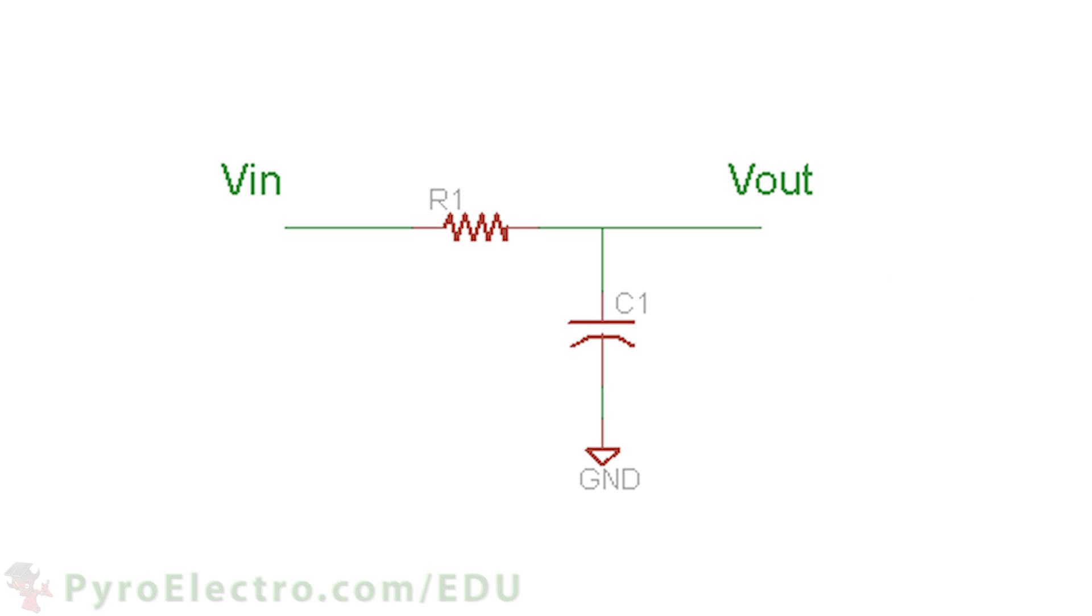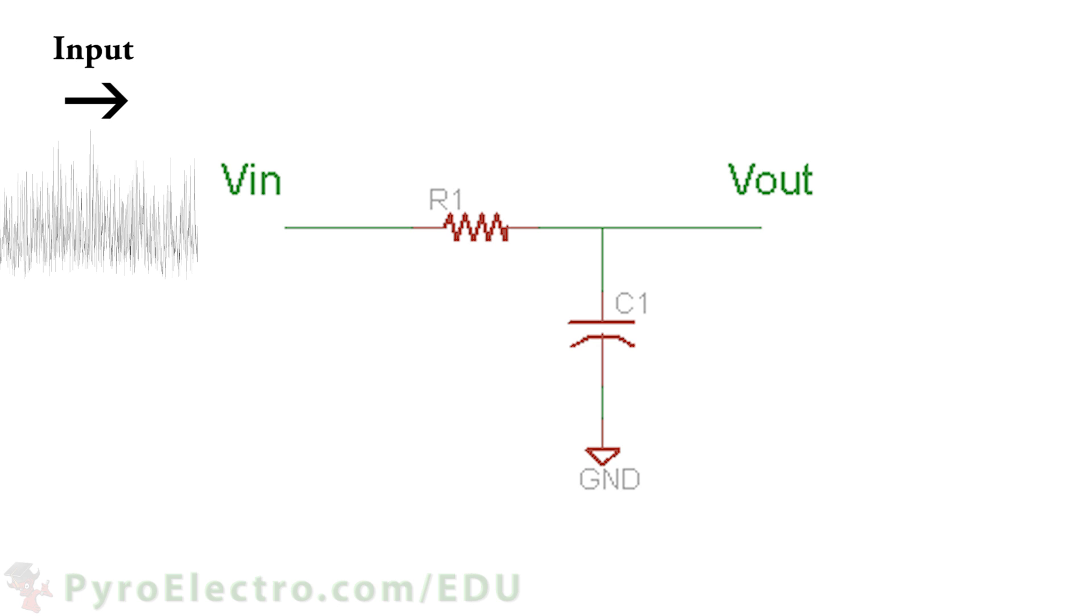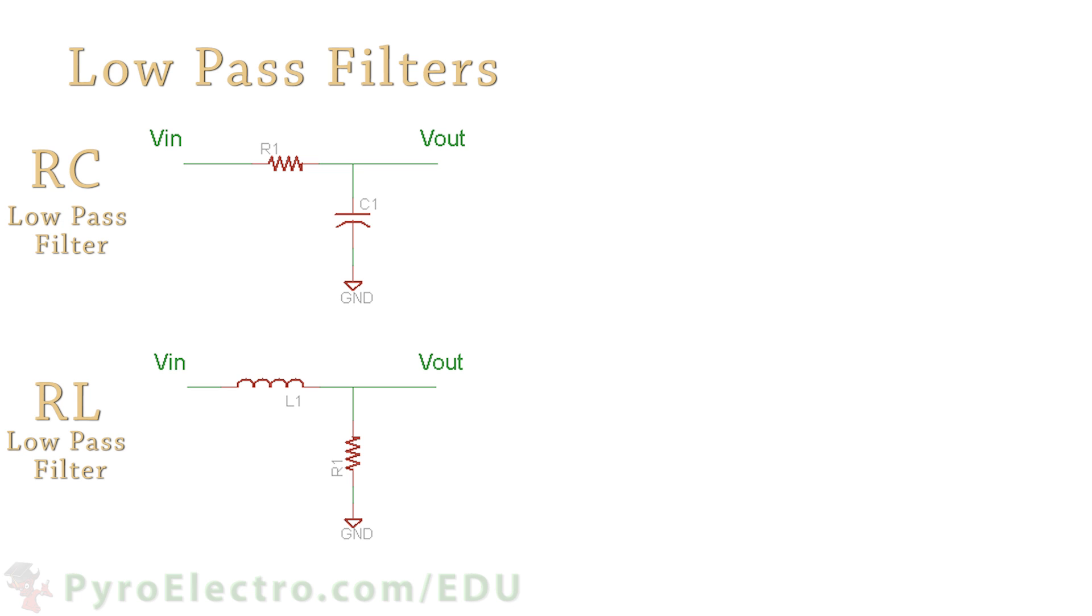When an AC signal like this travels by a capacitor connected to ground, certain frequencies of the signal will prefer to go through the capacitor to ground, and the rest will continue through the circuit. The formula to know which frequencies will pass through and which will get filtered looks like this.